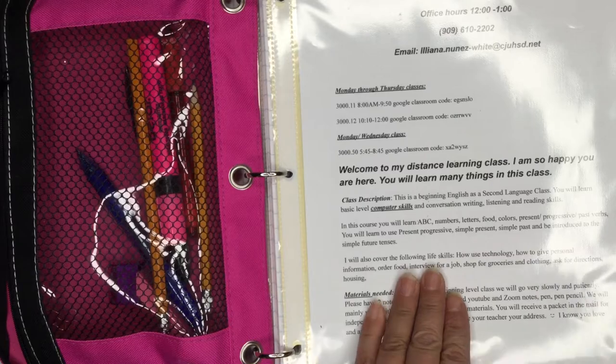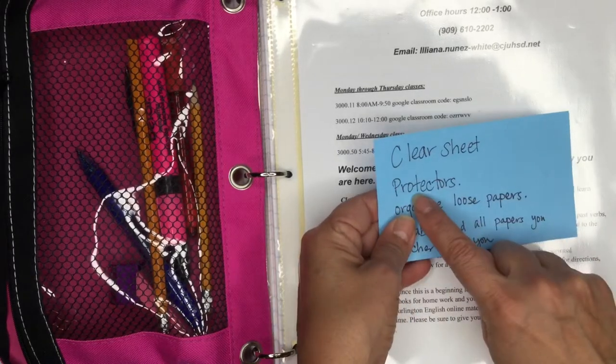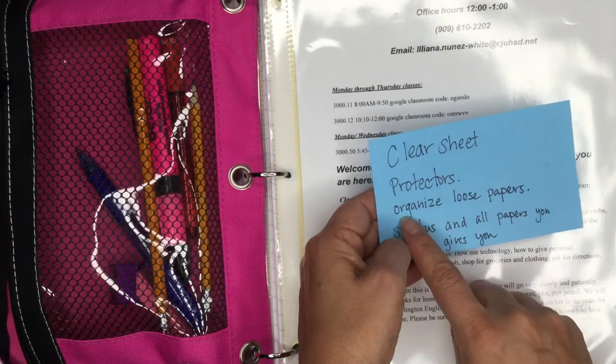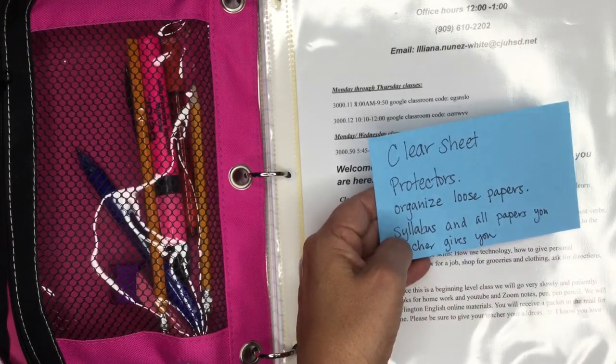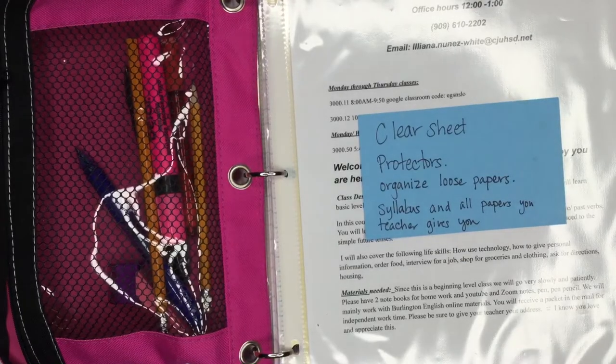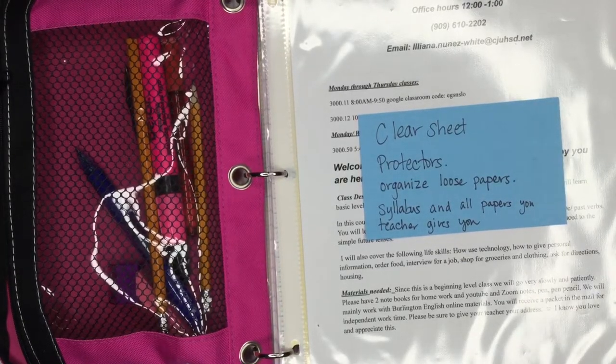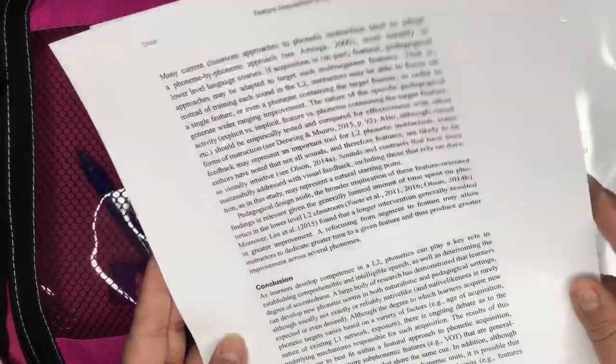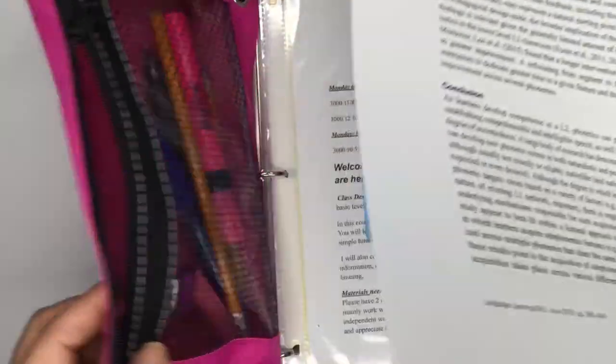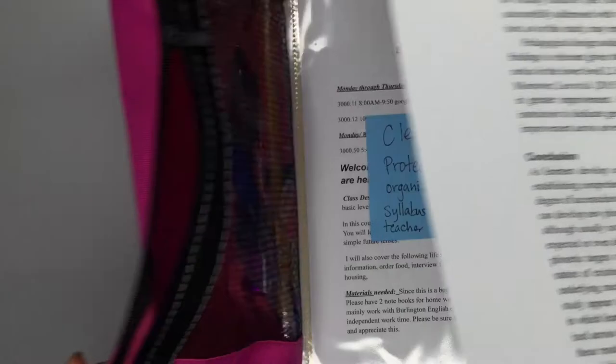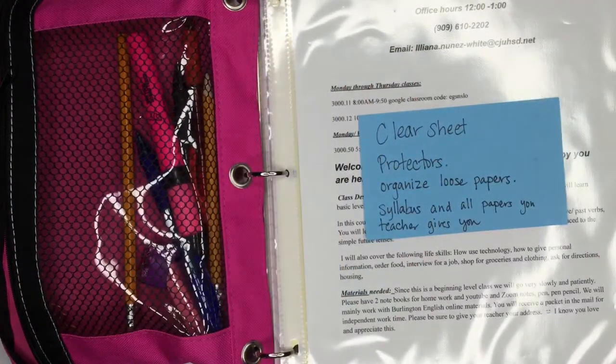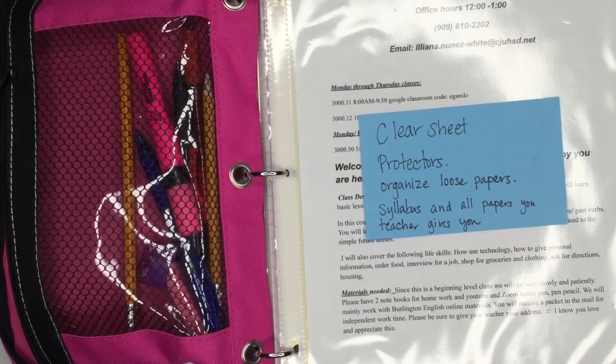Second thing you need is clear sheet protectors, because you will need them to put organized loose sheets of paper. If you have these kinds of paper, you don't want to just stuff them in there. You actually want a good place to put them in, so those are good for the loose paper.